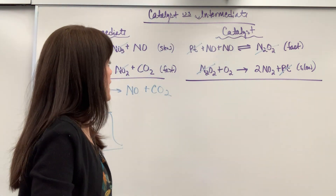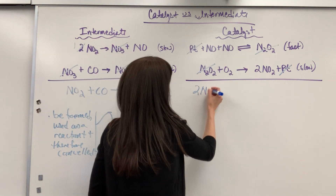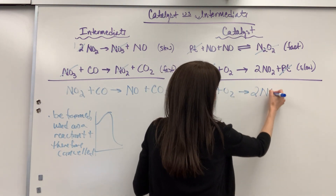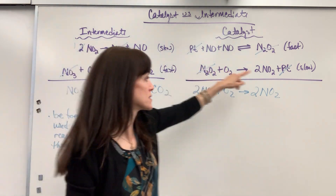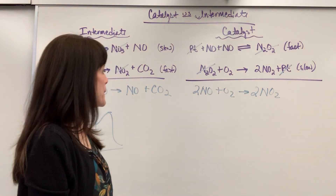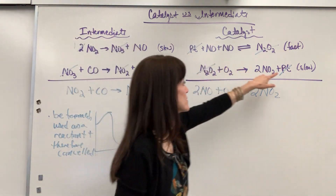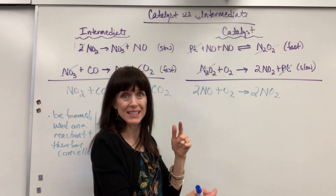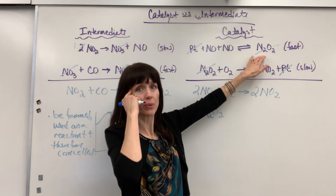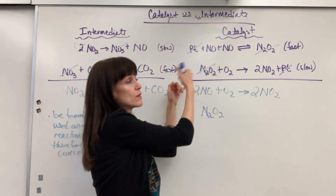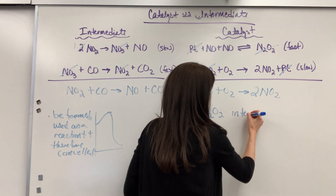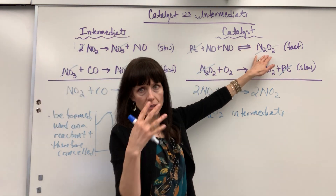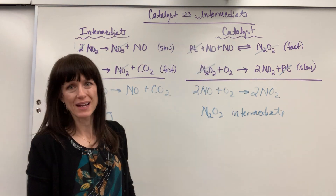Adding up everything left over: 2NO + O2 → 2NO2. The last elementary step is the slow step — that's the rate-determining step. Now, the N2O2 canceled out — that's an intermediate. The chemist made it up as a product in their head, it became a reactant, it was consumed and canceled out. It's nowhere in the final equation.